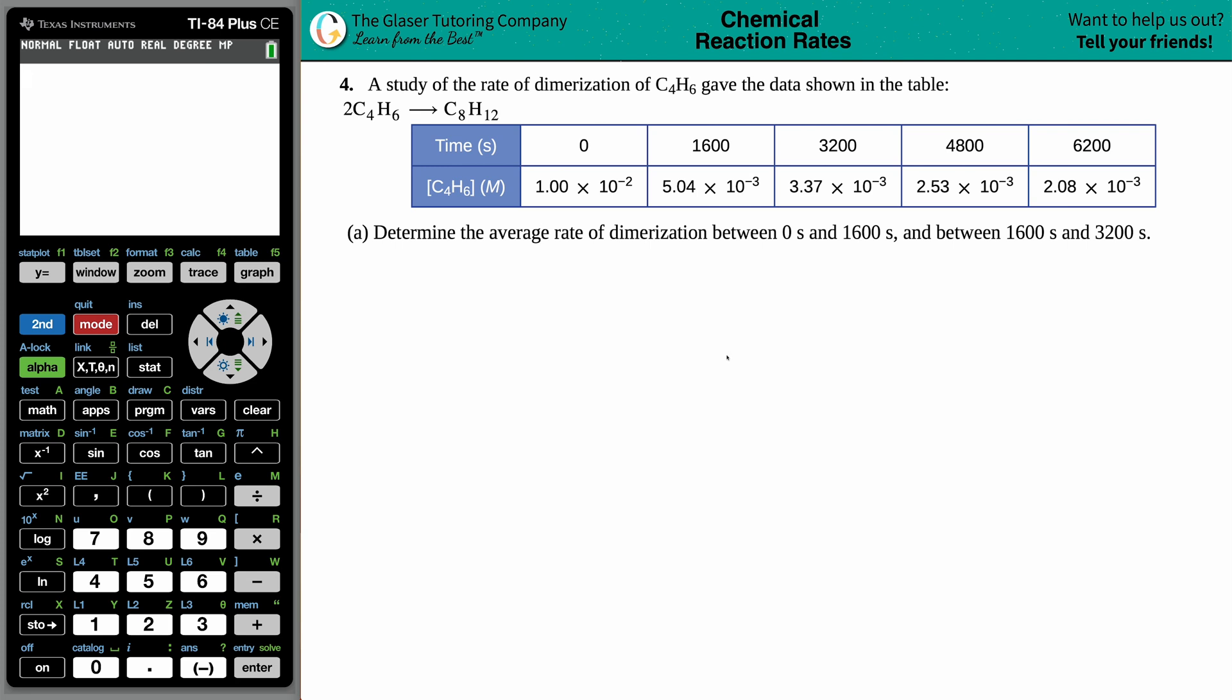Number four, a study of the rate of dimerization of C4H6 gave the data shown in the table. We have a balanced equation of two C4H6 yields C8H12, and here is the data that we collected. So we have a time value, and we have a molarity.